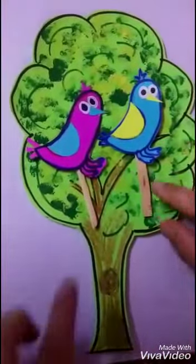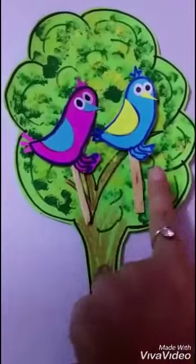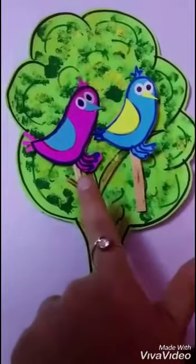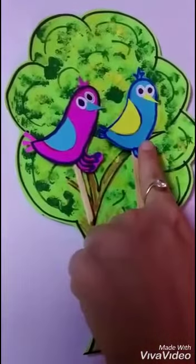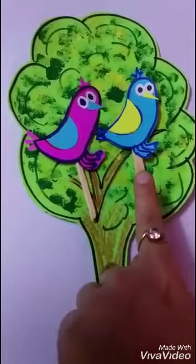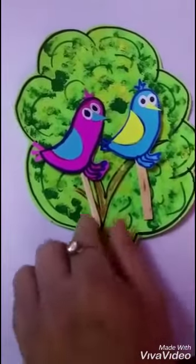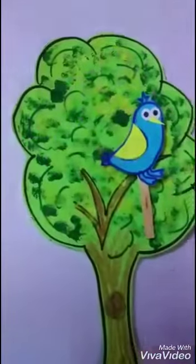Now look at this tree. There are few birds sitting on the tree. Let's count them. 1, 2. There are 2 birds sitting on the tree. Now 1 bird flew away.